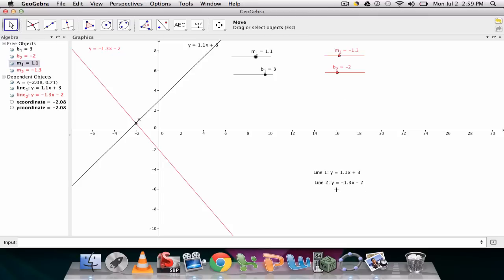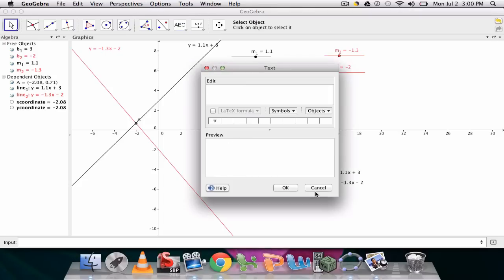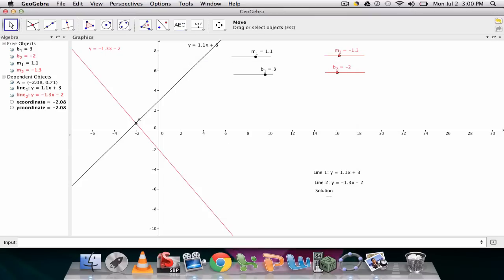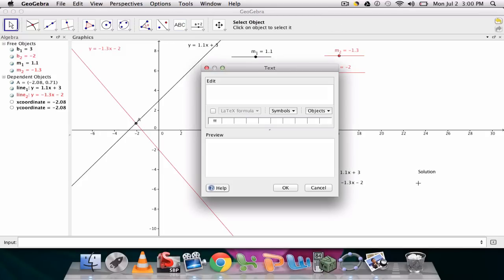And the last one I would probably set up a dynamic text for the intersection point. And I might do it like this. You click over here. And you type in solution. I'm going to drag this over here. And then, again, here for a solution, it's an intersection point, point A.